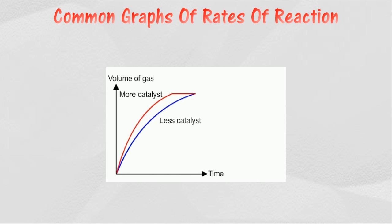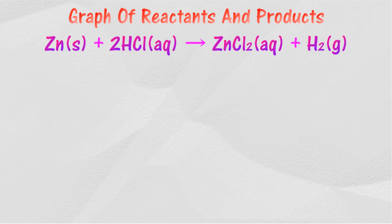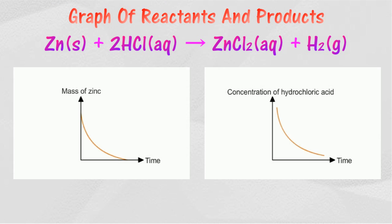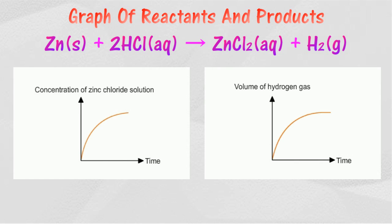For the reaction between zinc and hydrochloric acid, four types of graphs can be plotted: mass of zinc versus time, concentration of hydrochloric acid versus time, concentration of zinc chloride solution versus time, and volume of hydrogen gas versus time.